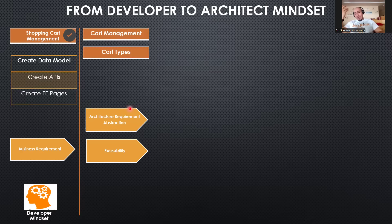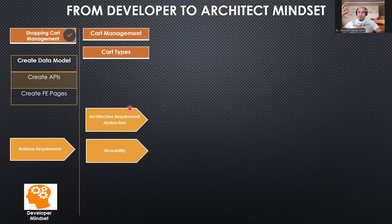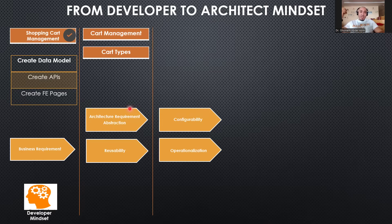He will think about removing the details. It was shopping cart management — so he removes 'shopping' and creates 'cart management.' He adds a new object called cart types, generating a component of cart management. Each cart can have different types, like shopping cart or violation carts. You can utilize this cart management object for different purposes and in different solutions, increasing reusability — one of the core quality attributes.